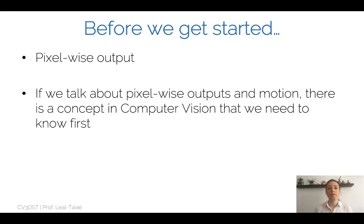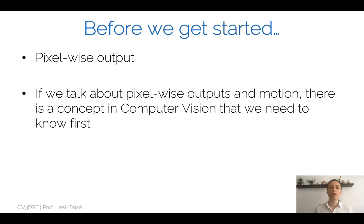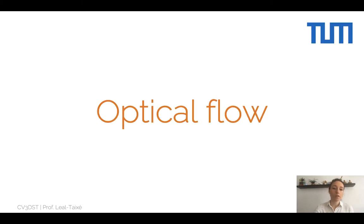Before we get started with deep learning methods for video object segmentation, we need to remember what we want from our method. We want a pixel-wise output — not bounding boxes or coordinates, but a decision for every pixel of our image about whether it belongs to an object or not. When talking about pixel-wise outputs and following objects through a video sequence, there is a concept in computer vision we need to know first: optical flow.